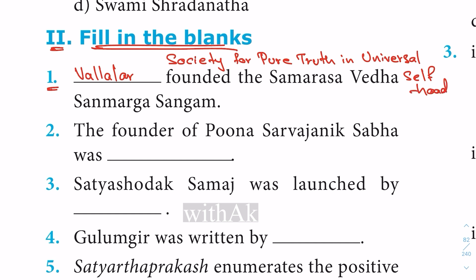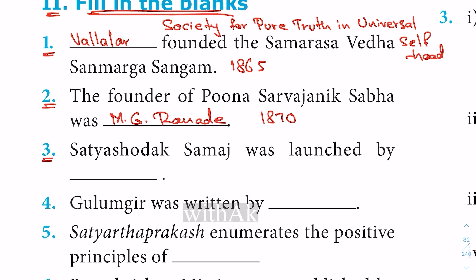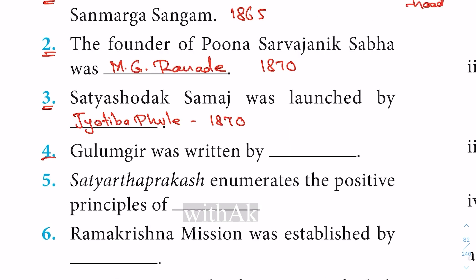Question 2: The founder of Puna Sarvajanik Sabha was blank — M.G. Ranade. The Sabha was started in 1870. Question 3: Satyashodhak Samaj was launched by blank — Jyotiba Phule, in the year 1870.